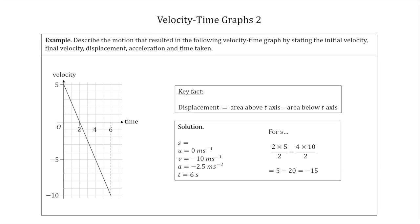So s is minus 15 meters. It's a negative number because it's a displacement — the object moved away from its starting point, then changed direction and moved back, continued past the starting point in the opposite (negative) direction, and ended up 15 meters away in the negative direction, even though it originally moved in the positive direction. That is how you use a velocity-time graph to find out information about the motion.